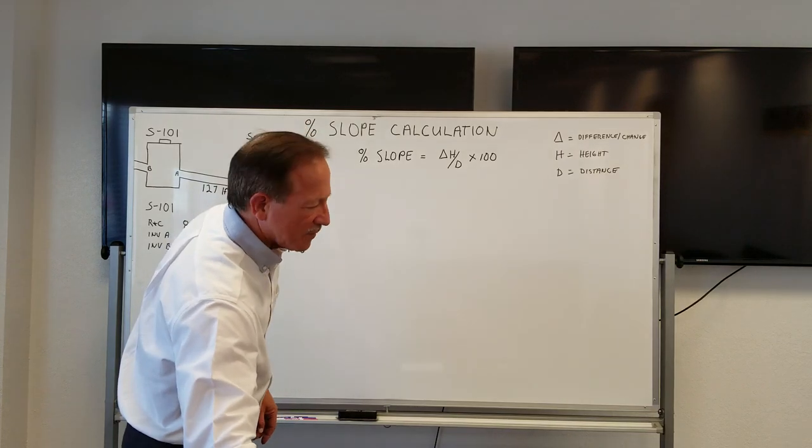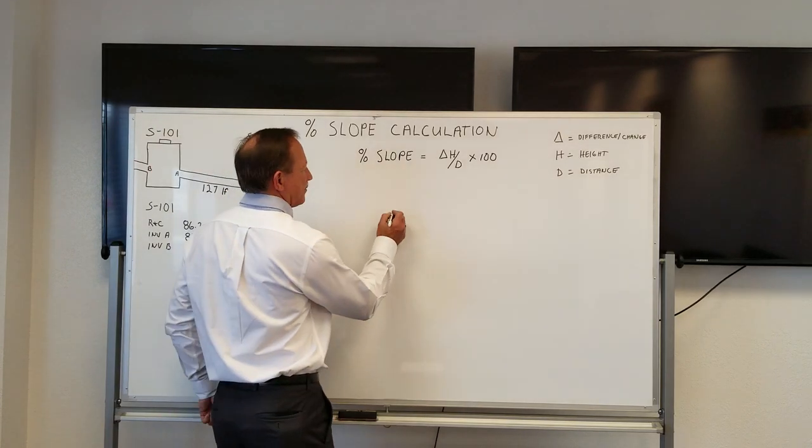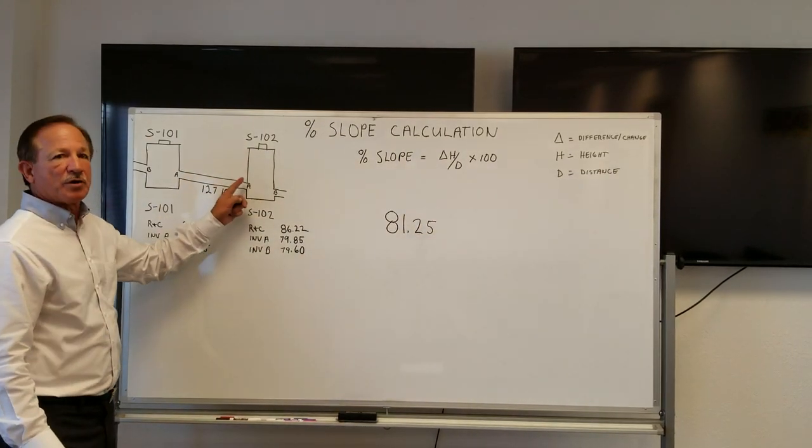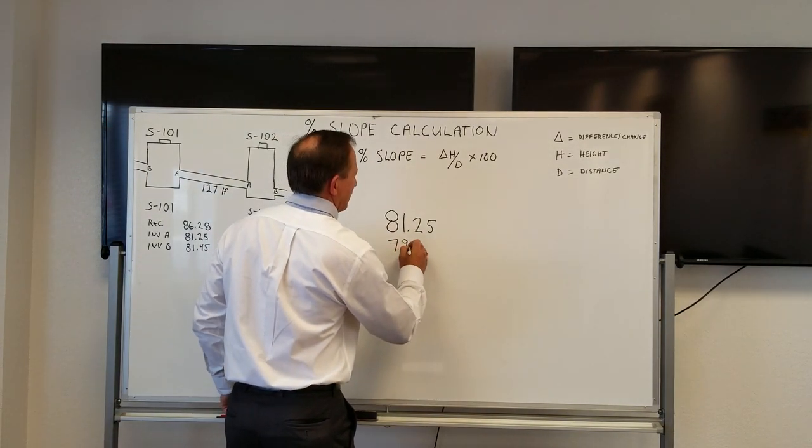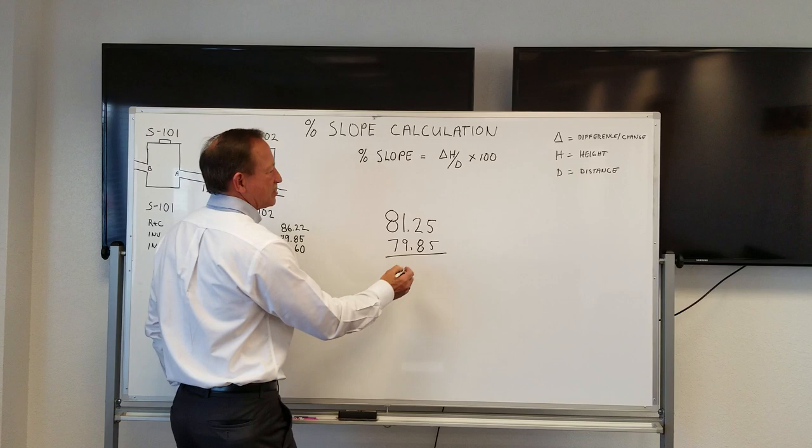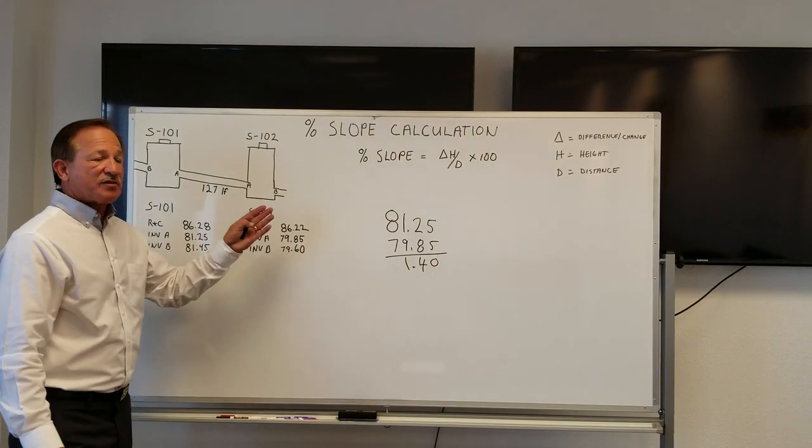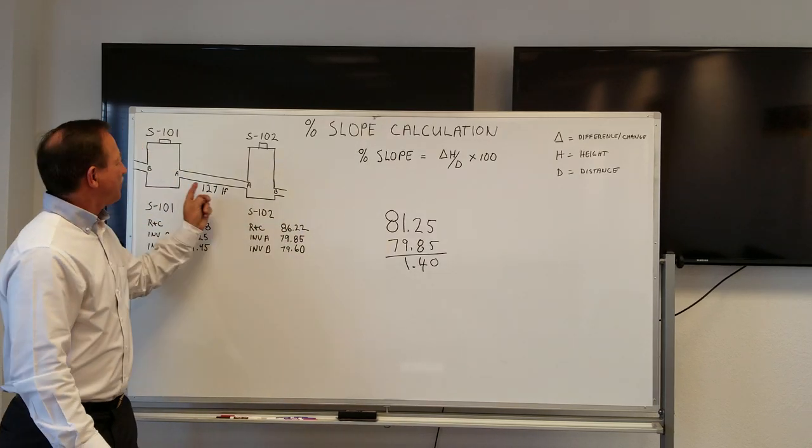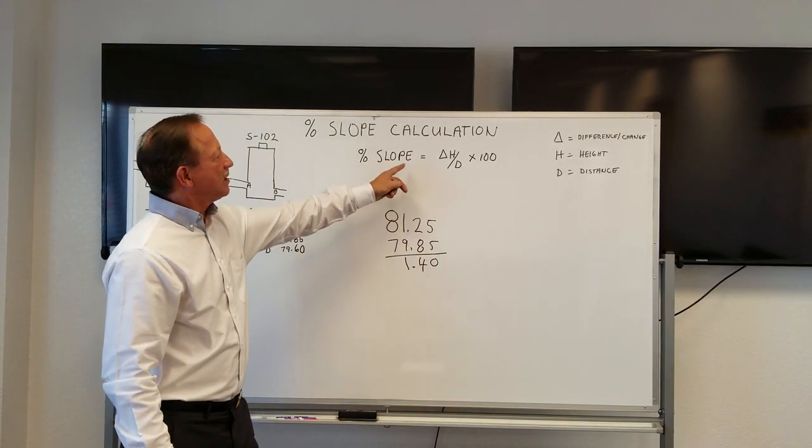So how do we calculate that? Let's start out with structure S-101 at 81.25, let's write that number down. And it's going to structure S-102, invert A at 79.85. Now all we have to do is a little simple math here, do some subtraction. When we do, you get 1.40. This drawing is in linear feet, so all our readings are in feet. So the change in height from invert A here to invert A here is 1.4 feet.